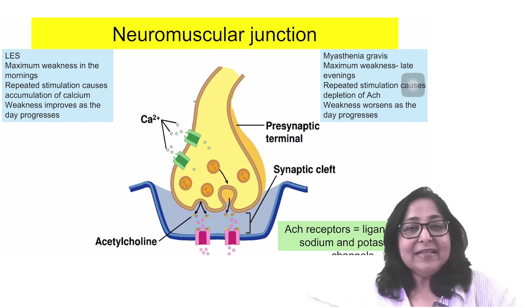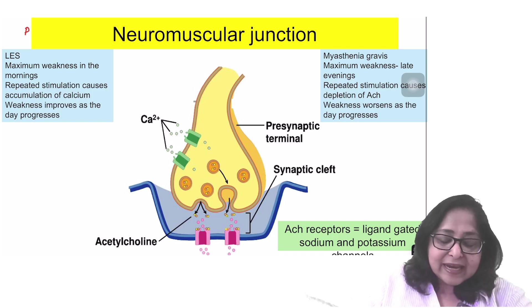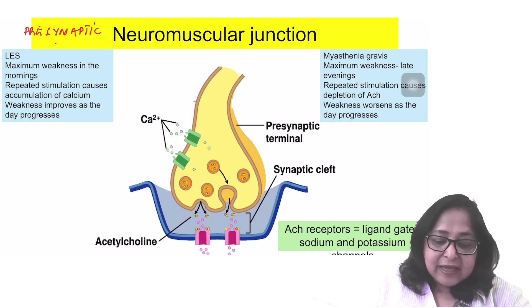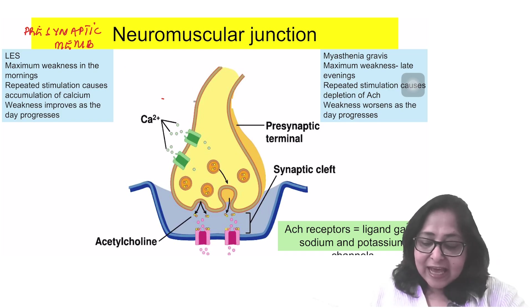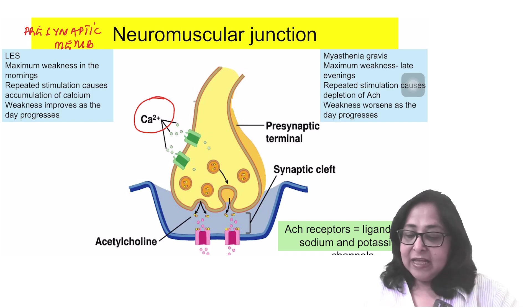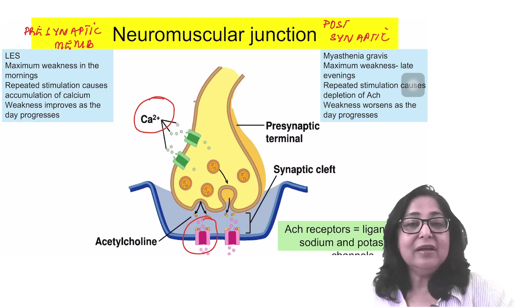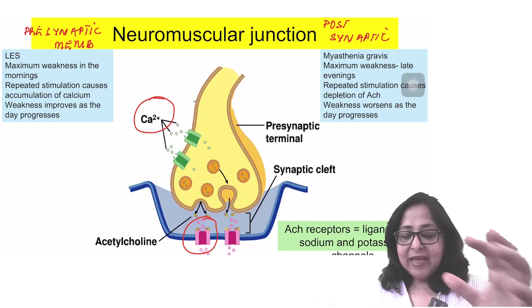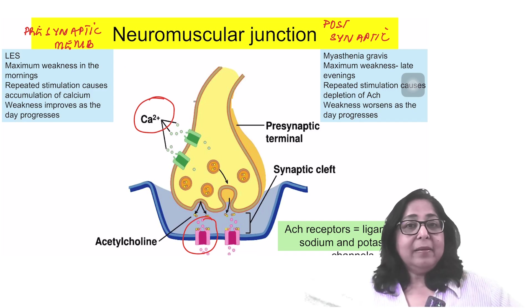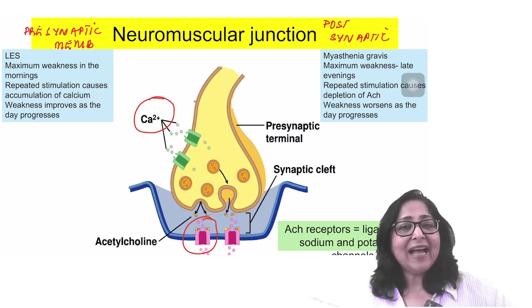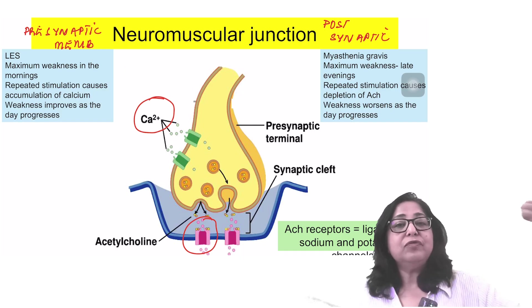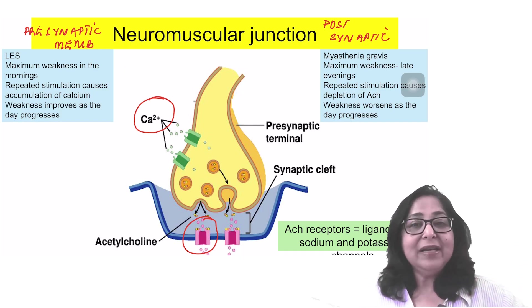In the case of Lambert-Eaton syndrome, the patient has maximum weakness in the early morning. His weakness in fact improves as the day progresses. This is because Lambert-Eaton syndrome is a disease of the pre-synaptic membrane, where antibodies are against the voltage-gated calcium channels on the nerve terminal. In Lambert-Eaton syndrome, maximum weakness in the early mornings when he gets up, but as the day progresses his weakness improves. This is because repeated stimulation causes an accumulation of calcium and increases the release of acetylcholine.